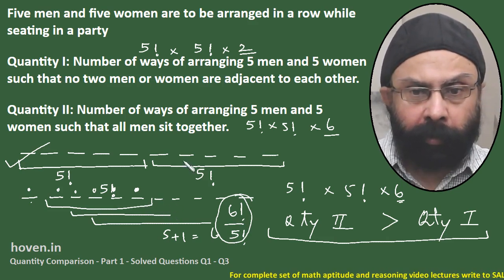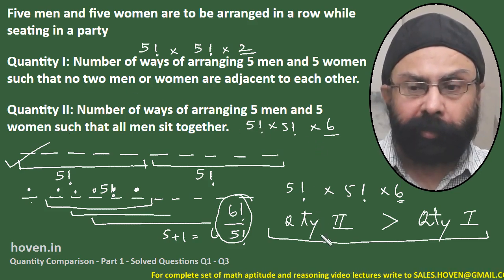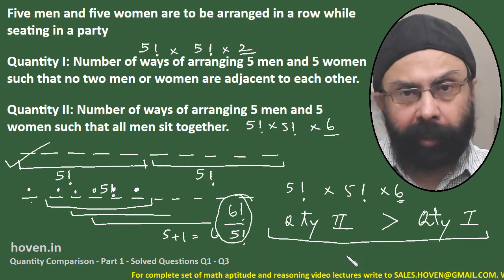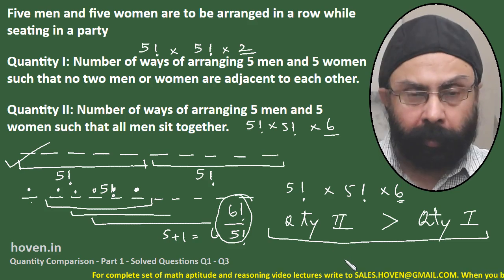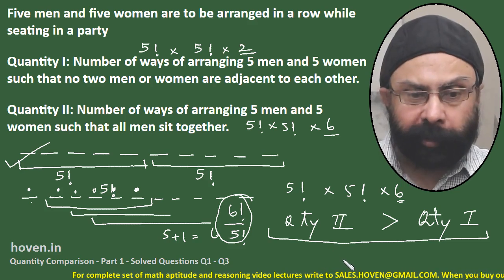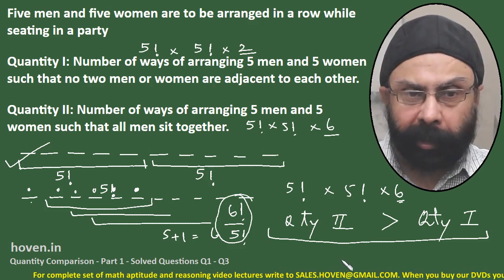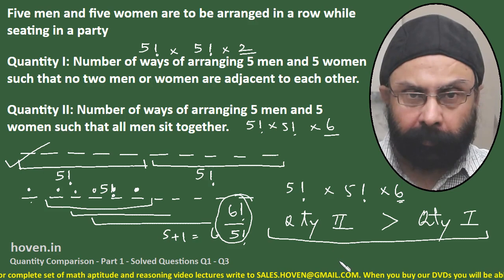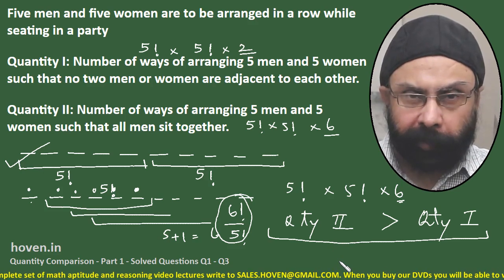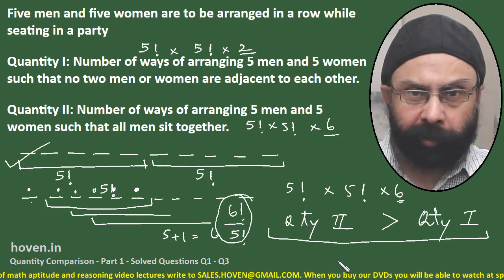The answer is that Quantity 2 is greater than Quantity 1. This question was asked in the 2017 SBI PO Mains exam, which has quite a good standard.